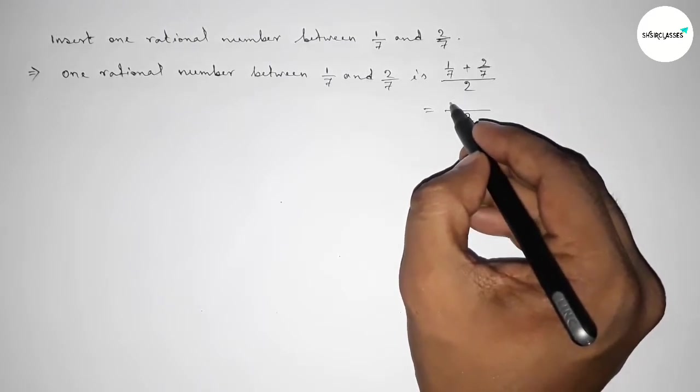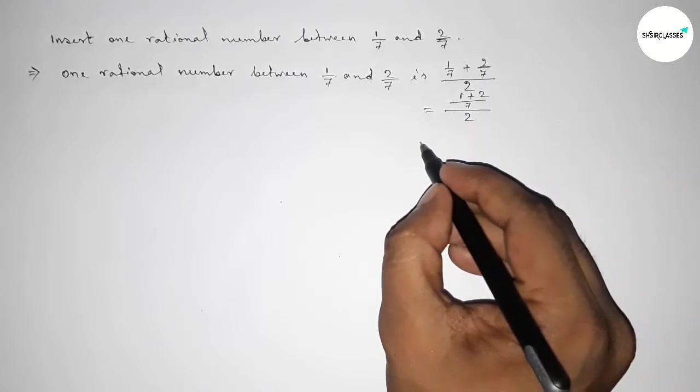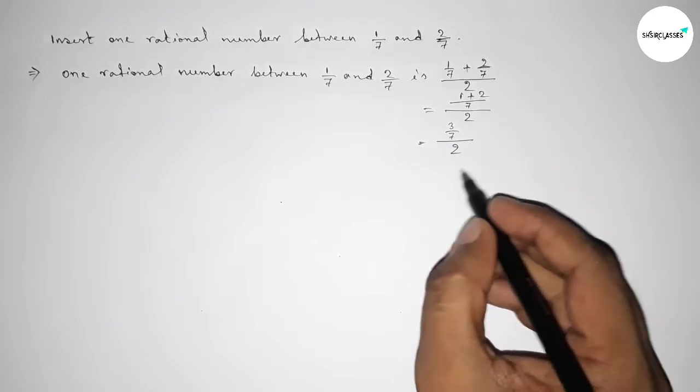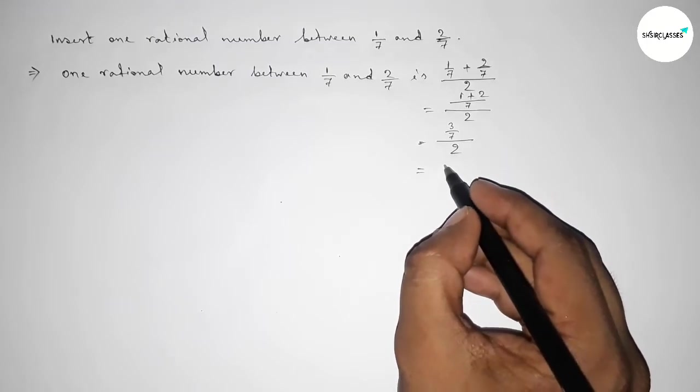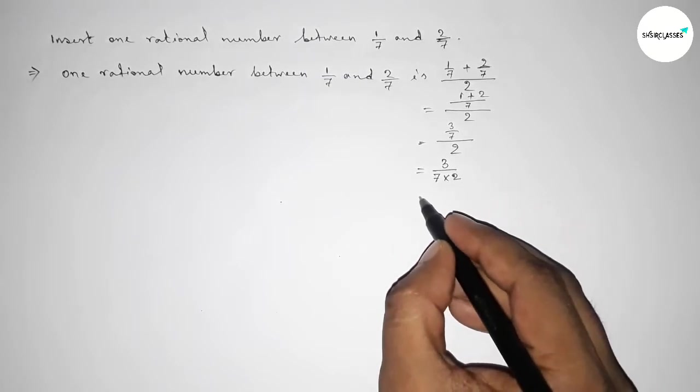This is 7, 7, so LCM is 7. So 1 plus 2, now simplifying this, this is 3, 3/7 divided by 2. Now simplifying this, we can write 3/7 times 1/2, so this equals 3/14.